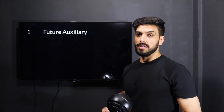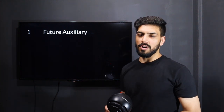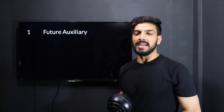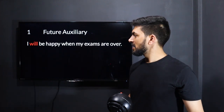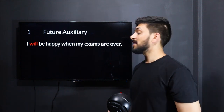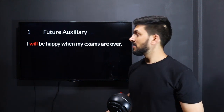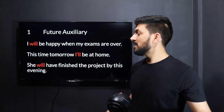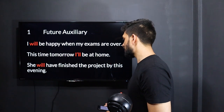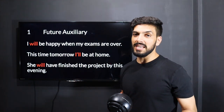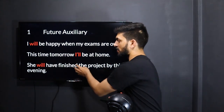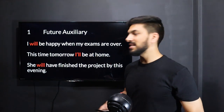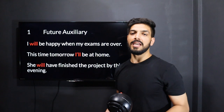Will is used as a future auxiliary. That means you can create a sentence for future tense, for anything simple or perfect. For example: 'I will be happy when my exams are over.' 'This time tomorrow I'll be at home.' 'She will have finished the project by this evening.' — that last one is a perfect tense. Everywhere you use will, and 'have' is added for the perfect tense.